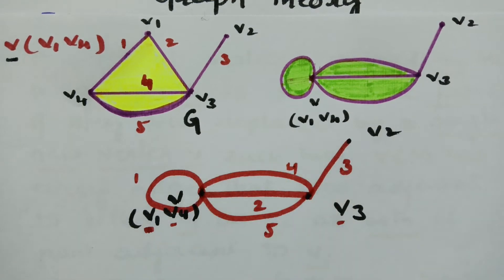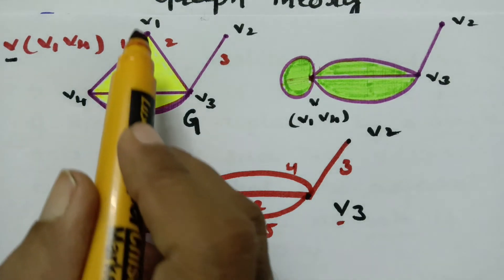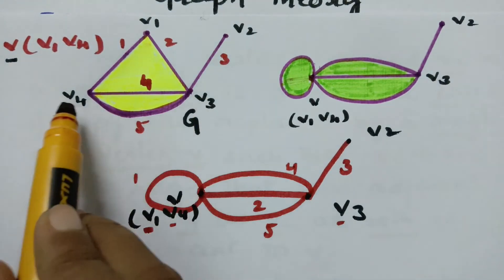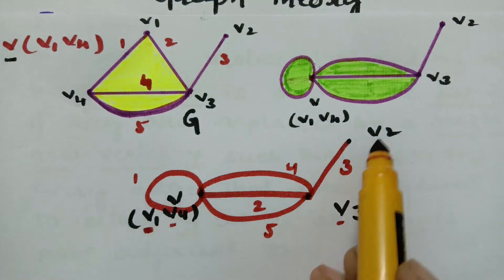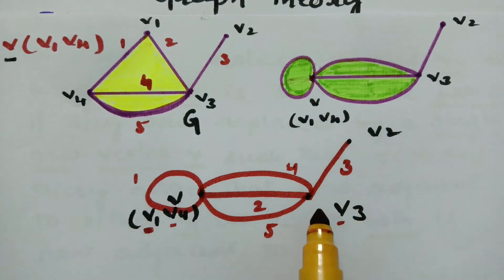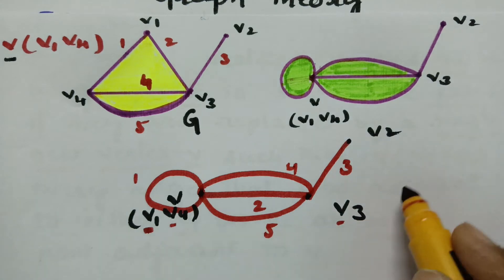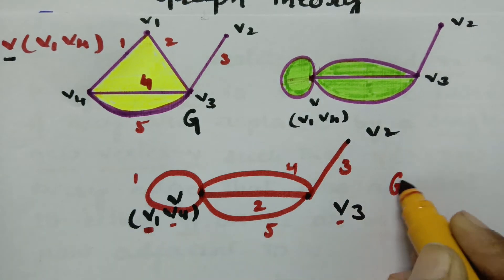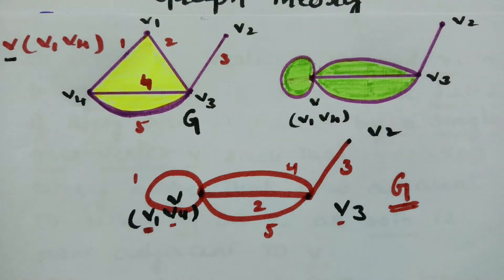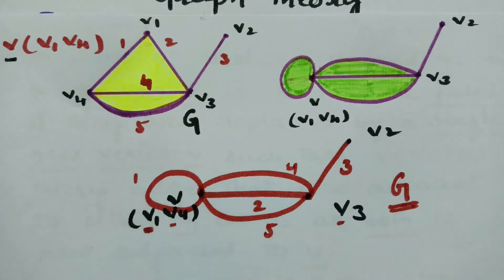The number of edges does not change, but the vertices are reduced by one. In the original graph there are 4 vertices; after fusion there are 3. It is reduced by 1. Therefore, this is the graph after fusion, where V1 and V4 are the fused vertices.